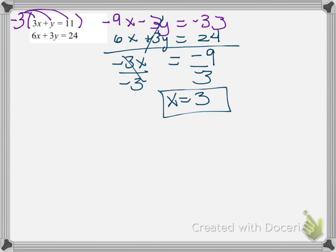Now that we have the x value, we can plug it into one of the original equations. That one has smaller numbers, so I would plug it into there. 3 times 3 plus y equals 11. So 9 plus y equals 11, subtract 9 from both sides, and we get y equals 2.